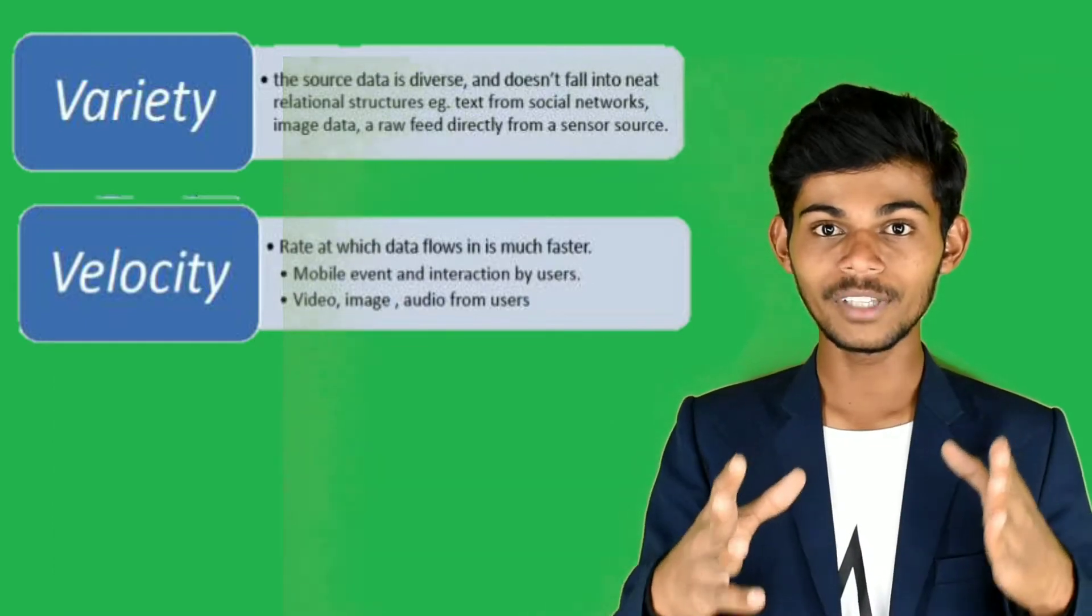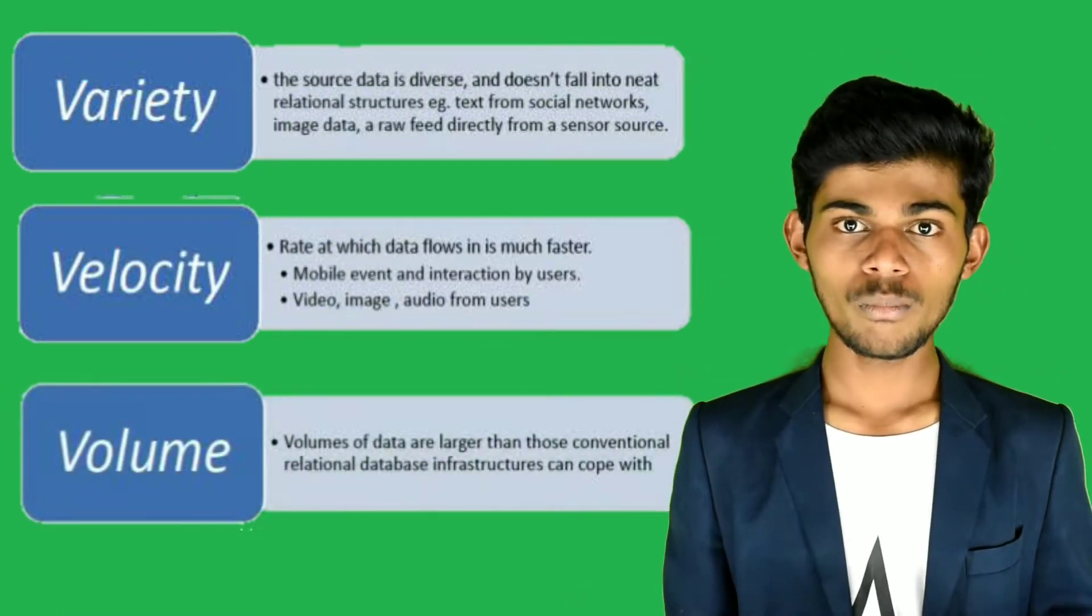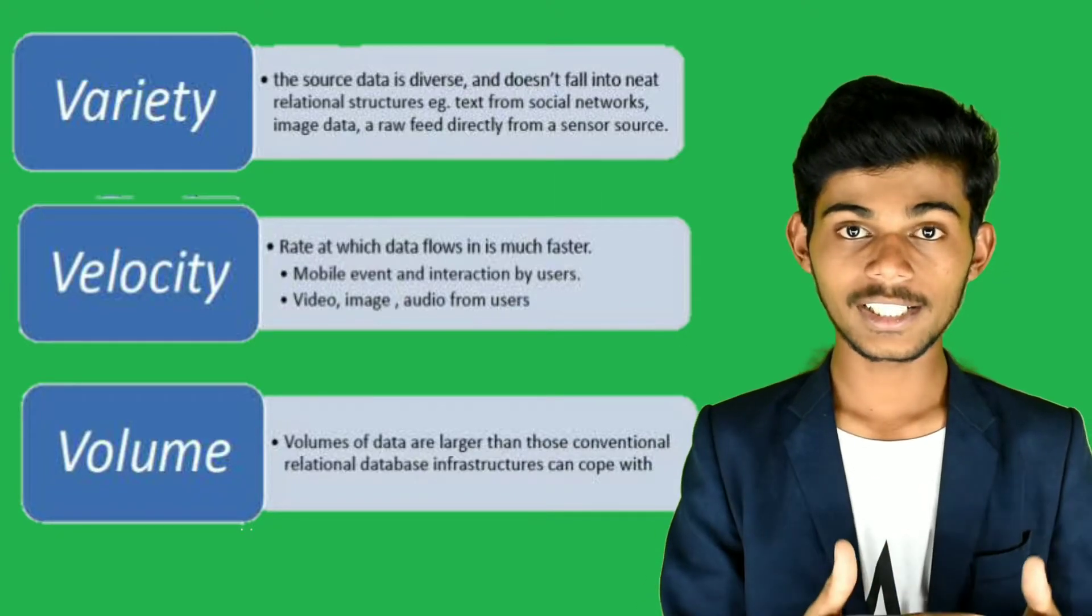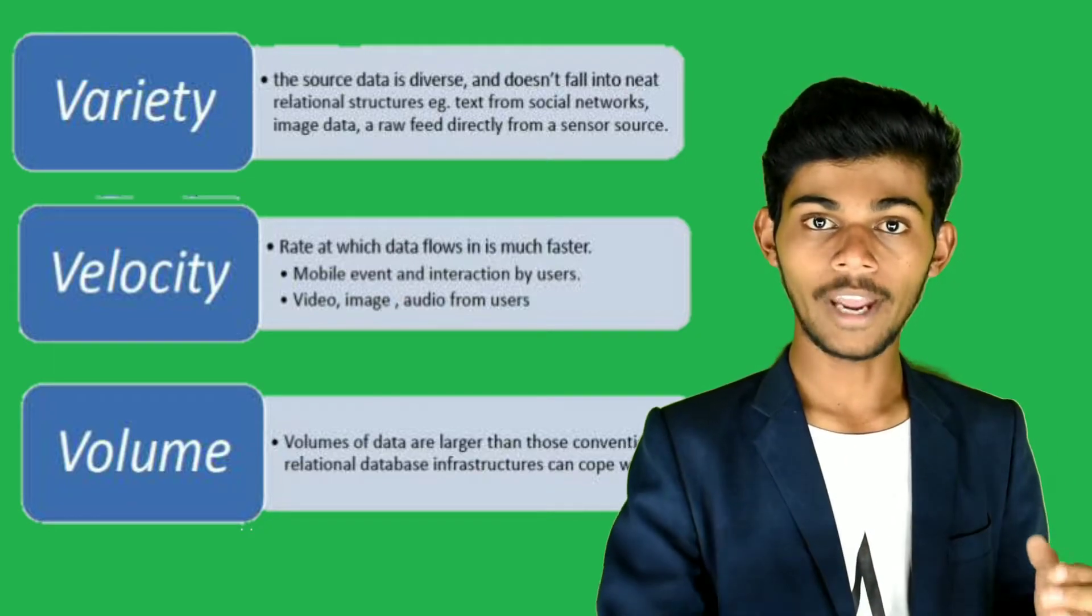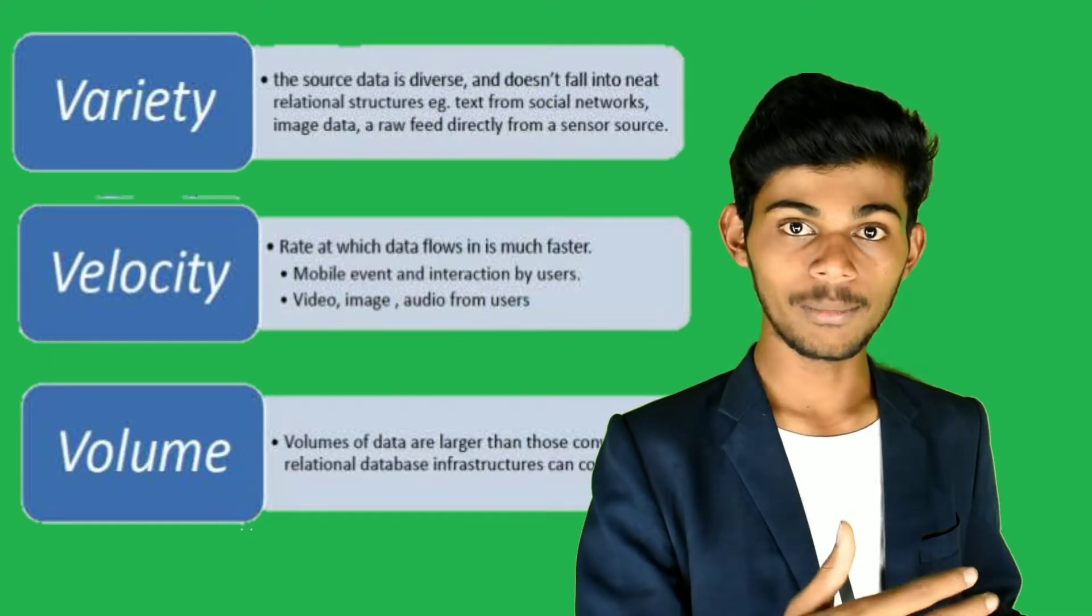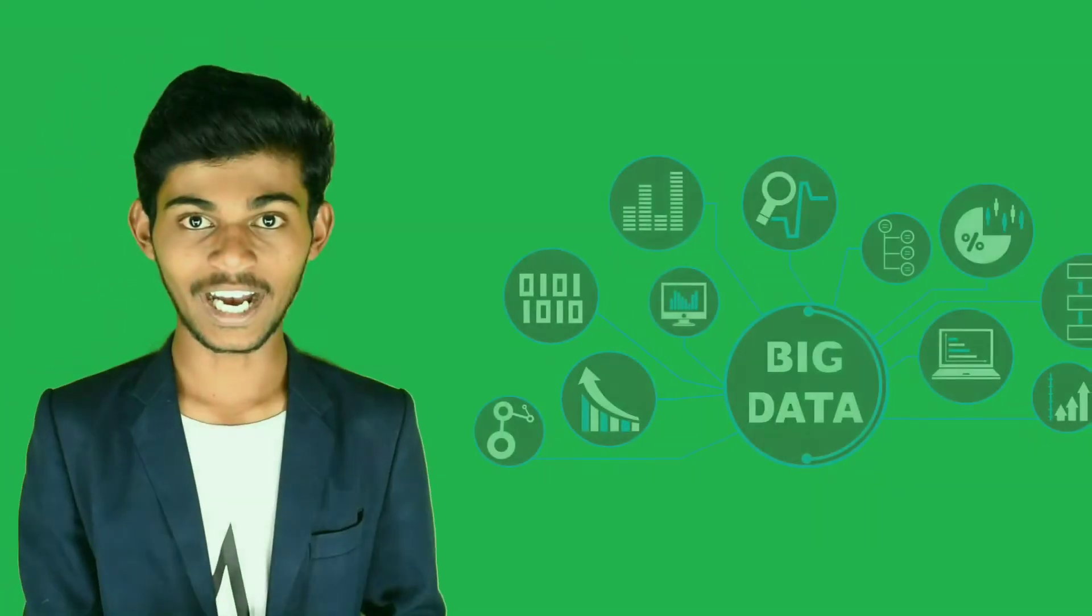This is possible from the big data processing. And last one is volume. Volume means the large amount of data. The three characteristics of the data are variety, velocity, and volume. If any particular data will implement these all three characteristics, then it's called as big data.